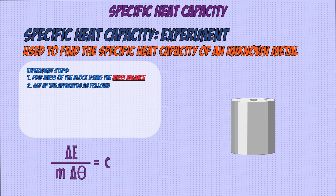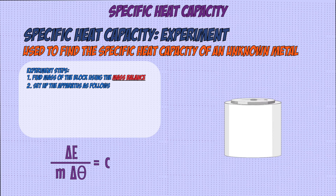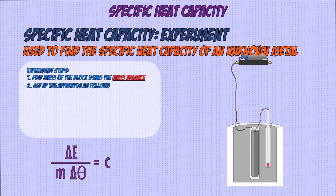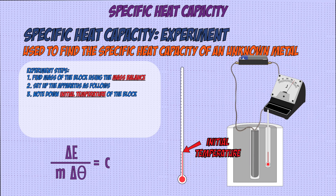You can then set up the main part of the experiment, which involves placing the metal block into the insulation and placing the immersion heater and thermometer into the metal block. The immersion heater needs to be connected to the battery pack for power and to the joule meter to find energy. Then you need to heat the metal block up and see how much the temperature rises by, so you note down the initial value of temperature and then turn on the immersion heater.